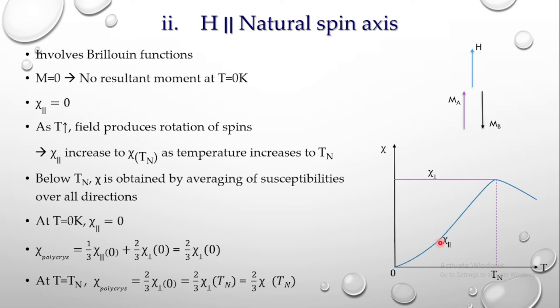We need to find the main contribution of susceptibility components below Tn by taking the average of χ⊥ and χ∥. When we take the average, χ_polycrystalline lies intermediate between χ⊥ and χ∥. This is the characteristic curve for antiferromagnetic material, which we had seen in the previous class while discussing features of antiferromagnetic material.